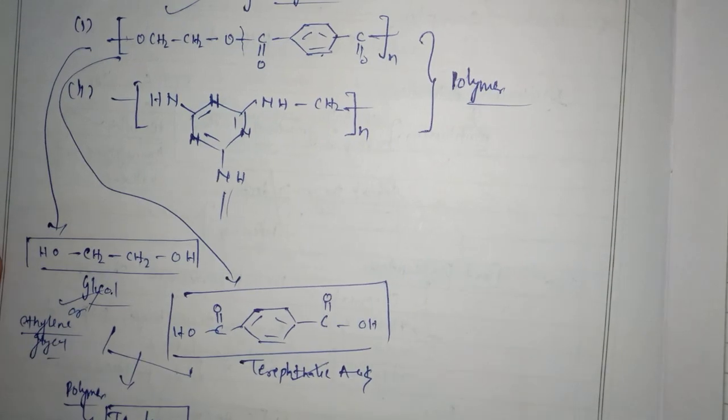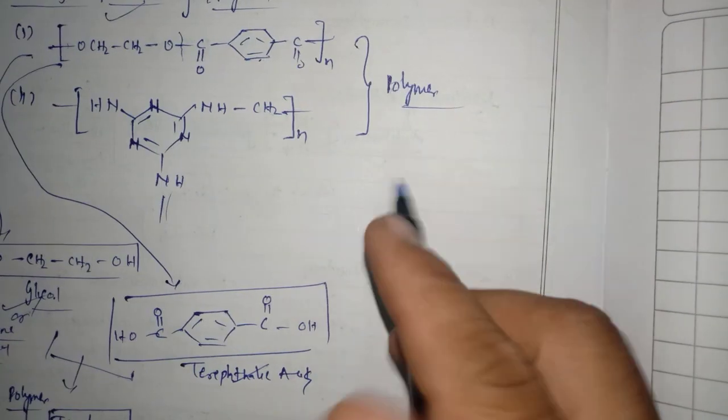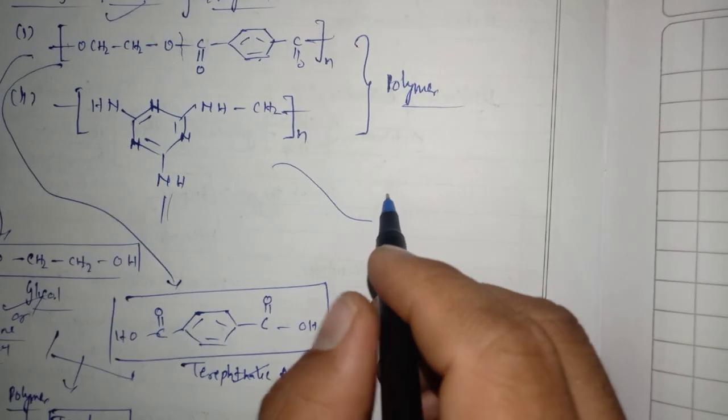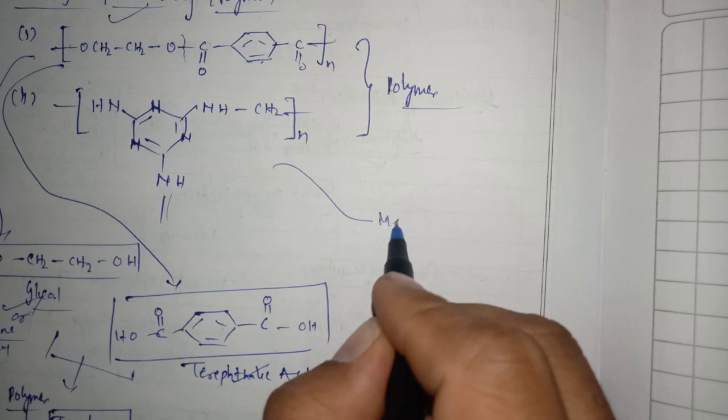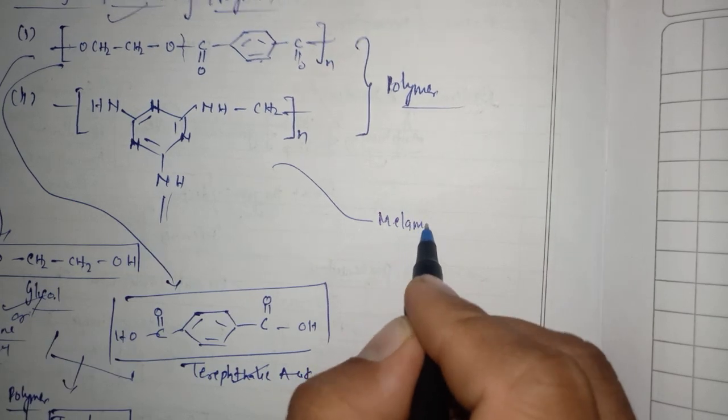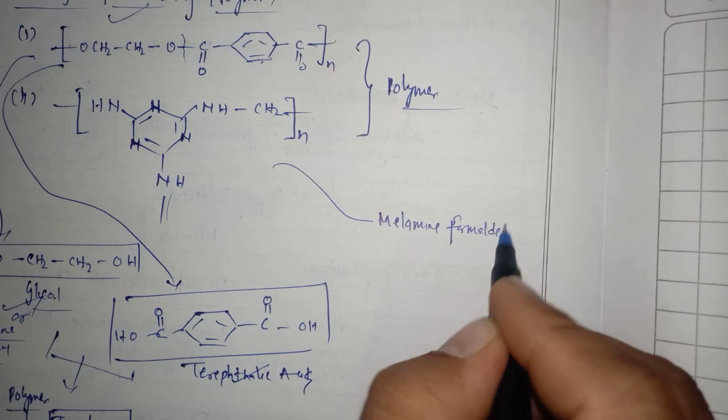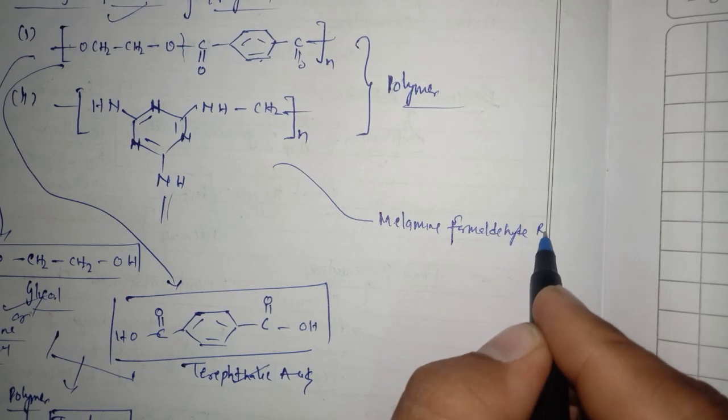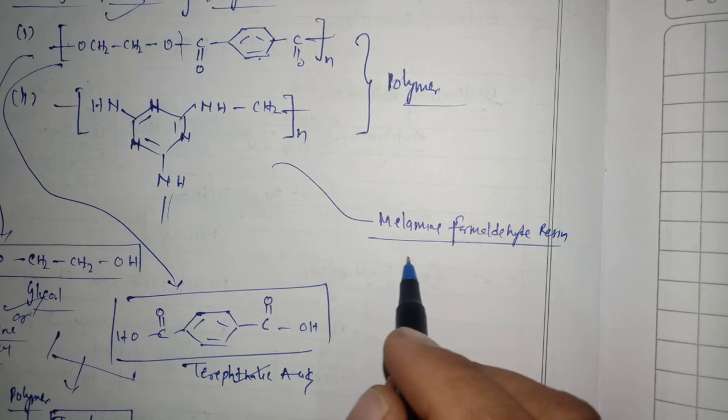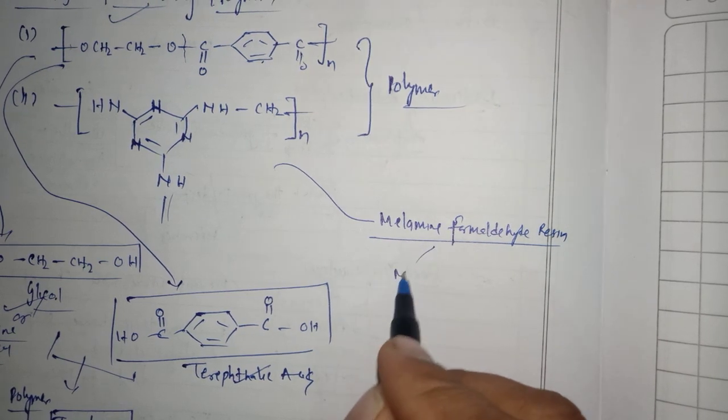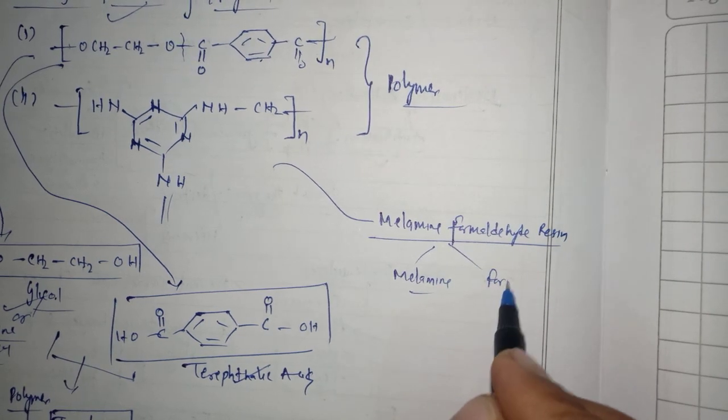What about the second one? The second one is your polymer. This polymer name is called melamine formaldehyde resin, and it is having the presence of monomer called melamine and formaldehyde.